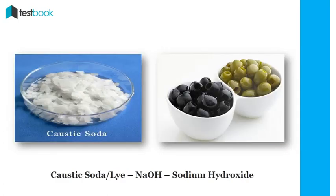Caustic soda is also called lye or sodium hydroxide. It is majorly used in paper-making factories to convert wood into pulp. Lye is also used in the food industry to turn green olives into black olives.